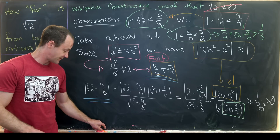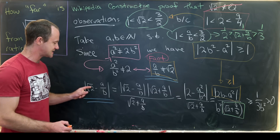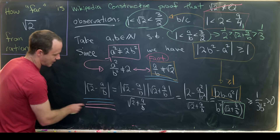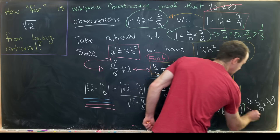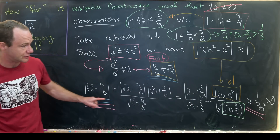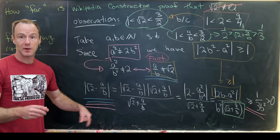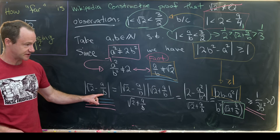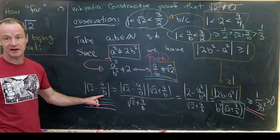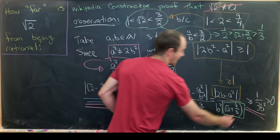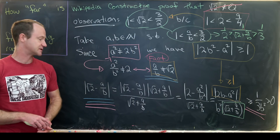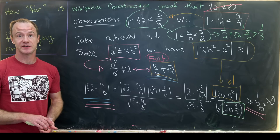What we did find is this nice bound — underlined in pink — that bounds the square root of two away from any rational number with a given denominator. Specifically, it bounds √2 away from rationals with denominator b by 1/(3b²). I think that in itself is pretty interesting, and that's a good place to stop.